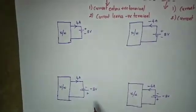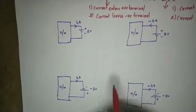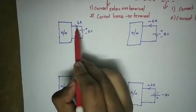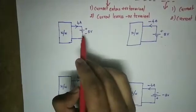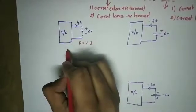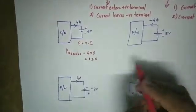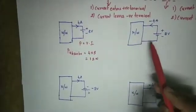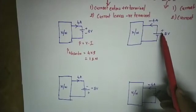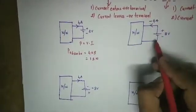Next, I will consider 4 networks. These 4 networks are equivalent circuits. Here we have 4 amperes current and a voltage source. The current enters the positive terminal, so this is absorbed power.